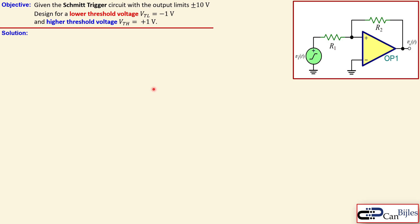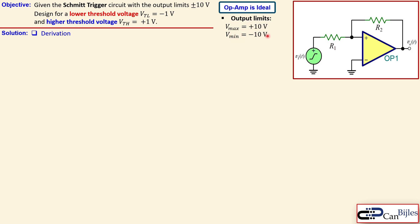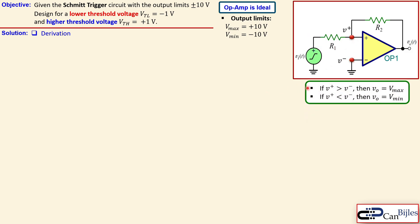Let's first look at the solution. Before the actual calculation we need to derive the threshold voltage expressions. We will assume the op-amp is ideal, and we use the op-amp output limits of V_max equal to plus 10 volts and V_min equal to minus 10 volts. We designate the non-inverting input as V+ and the inverting input as V−. We know that if V+ is larger than V−, the op-amp output goes to the positive rail, V_max. But if V− is larger than V+, the output goes to V_min.